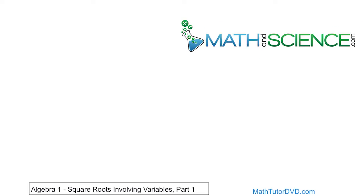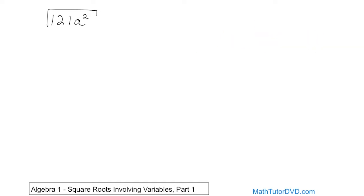When given a problem like √(121a²), you may not know what to do because you haven't practiced it yet. But now we have. Even though it looks more complicated because a² is in there, the same rules and technique apply. The 121 is multiplied by a², and a² is really a times a. All of this is under the radical, and we're going to write a big factor tree to handle it.